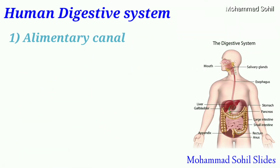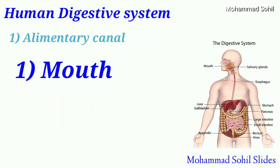Let's discuss one by one. First, the mouth. In the mouth there are teeth which masticate the food and convert larger particles of food into smaller ones. The tongue helps in tasting the food and rolling it into a soft ball. There are salivary glands in the mouth which secrete saliva.